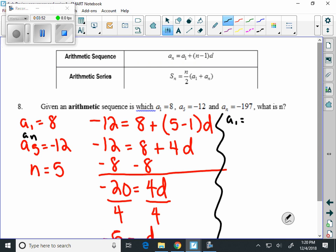Our a sub 1 is still 8. And our a sub n is negative 197. Our common difference we just found is negative 5.